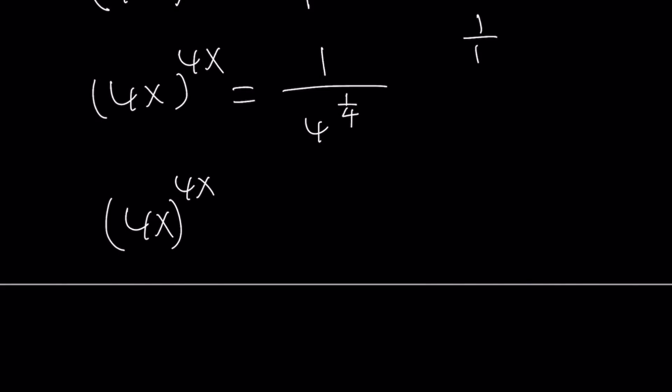Now remember, 1 over b to the n is the same as 1 over b to the power n. So we can write this as this number as 1 over 4 to the power 1 over 4, because that's what it is by this rule. Makes sense? Beautiful.